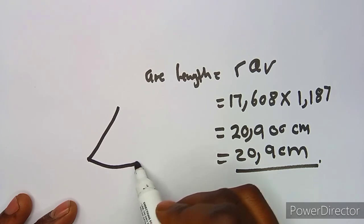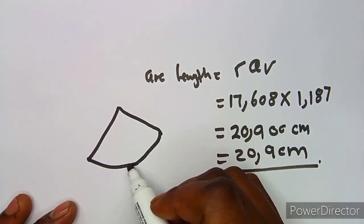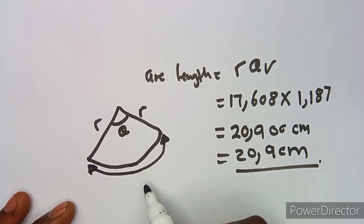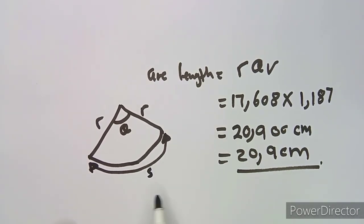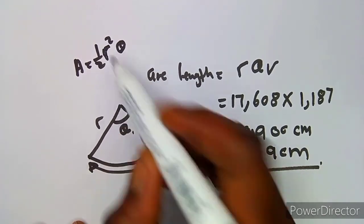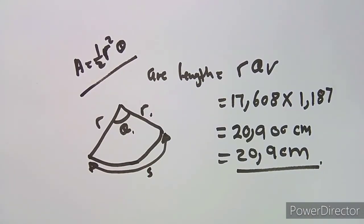To summarize the sector formulas: the arc length is s = rθ, and the area of the sector is A = ½r²θ. Always ensure your angle θ is in radians. Use the area to find the radius first, then calculate the arc length.